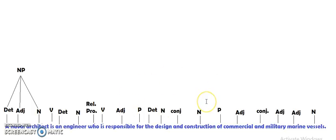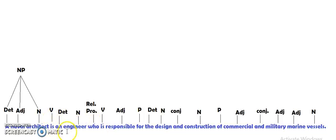After that we look for the other phrases we have, other than the verb phrase, because under the verb phrase we have a lot of things. We'll take them one by one. If we look here, we have the verb, the determiner, the noun, and they are followed by a relative pronoun. A relative pronoun gives me a whole other sentence.